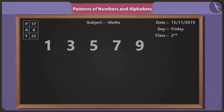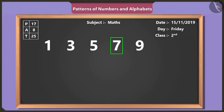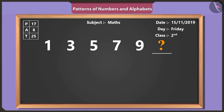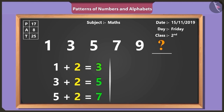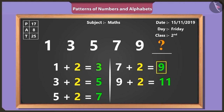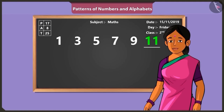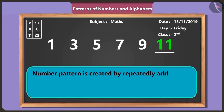Binny, can you see a pattern in these numbers? One, three, five, seven, nine. These numbers are written in ascending order. So tell me, which number comes after nine? Ten comes after nine. No, Binny. Look carefully — these numbers are written in a pattern. By adding one and two, you get three. Two added to three gives five. Two added to five gives seven. Two added to seven gives nine. And two added to nine, the result is eleven. Therefore, eleven comes after nine in this pattern. Well done. So children, a number pattern is created by repeatedly adding a specific number to given numbers.